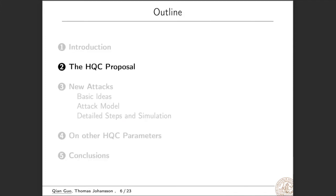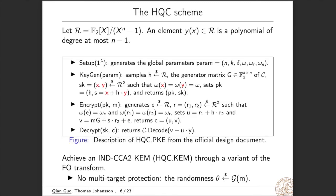Next, I'll describe the detailed description of the HQC proposal. So we see that let R be a polynomial ring and the element y(X) is a polynomial of degree at most n minus 1. So this is the description of HQC PKE from the official design document. The first step in the setup, we generate the global parameters n, k, w, wr, and we.